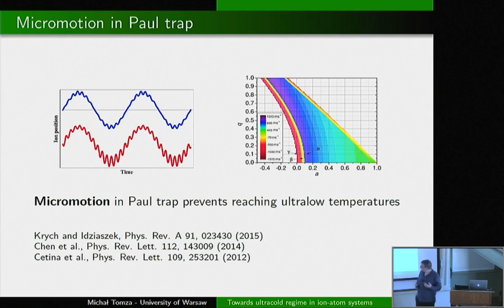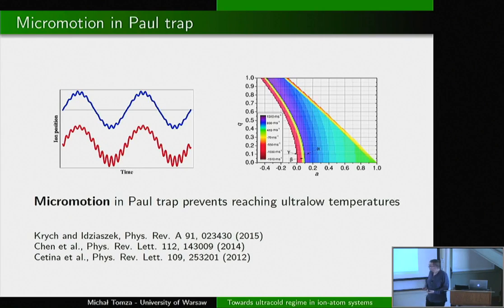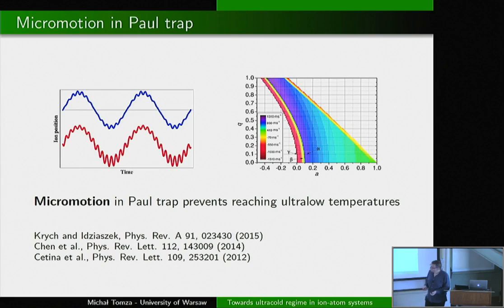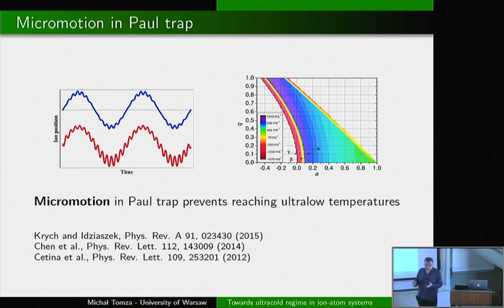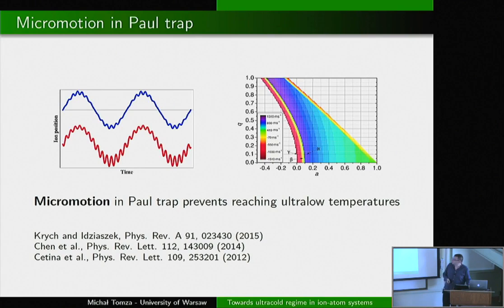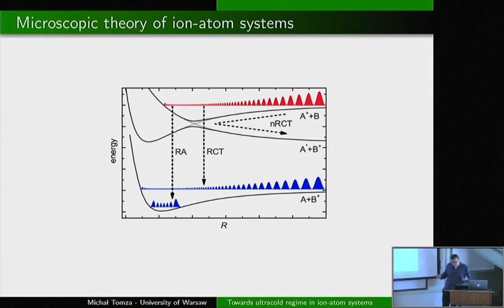As pointed out by Roni Ozeri, there is always micromotion in the Paul trap. Even with an excellent setup correcting to 200 microkelvins, micromotion is still present. The best systems to use are those where the mass ratio of ion to atom is largest. One of the heaviest ions is ytterbium; the lightest ultra-cold atom is lithium. So ytterbium ion plus lithium atoms is one of the systems closest to the S-wave regime, given the best micromotion correction.